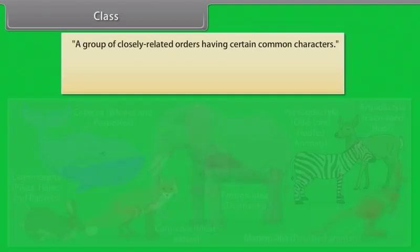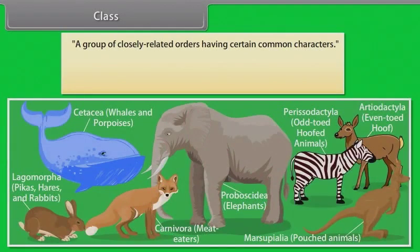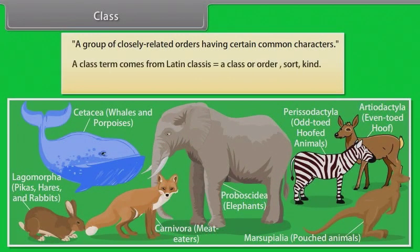A class is a group of closely related orders having certain common characters. The term class comes from Latin classis meaning a class, order, sort, or kind.